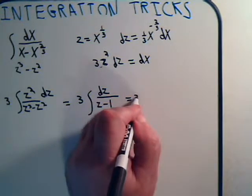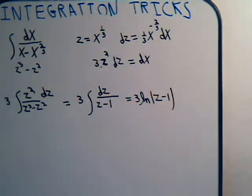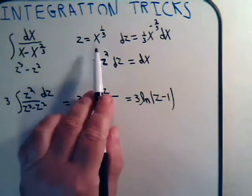This just equals 3 times the natural log of z minus 1. And what is z? It's this.